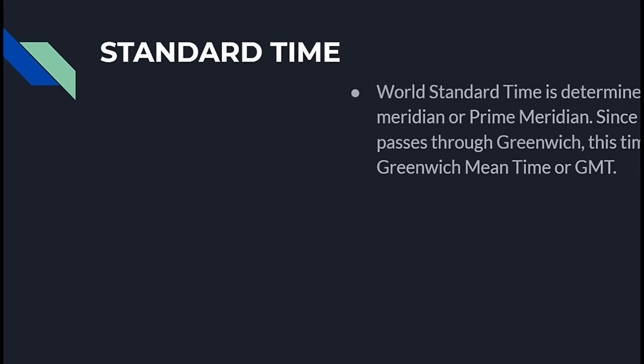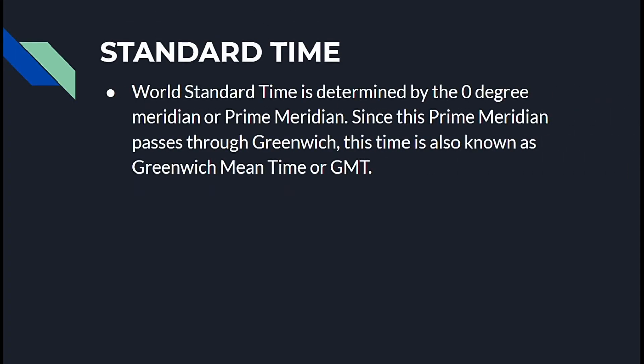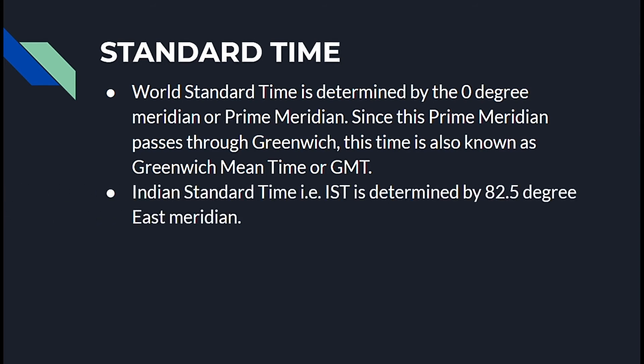World Standard Time is determined by the zero degree meridian, or prime meridian. Since this prime meridian passes through Greenwich, this time is also known as Greenwich Mean Time, or GMT. Indian Standard Time, that is IST, is determined by the 82.5 degree East meridian.